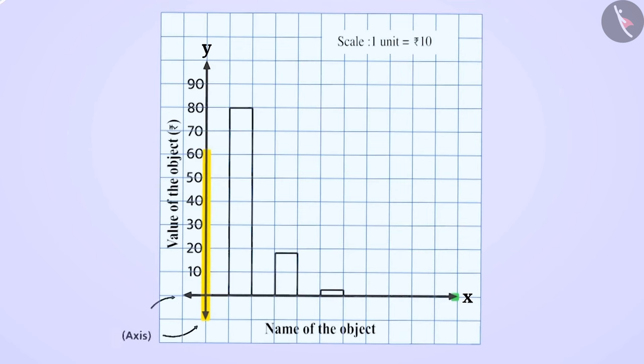The bar graph has two axes. That is, the horizontal x-axis and the vertical y-axis.